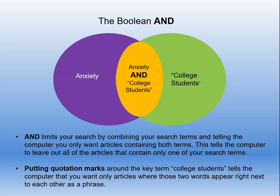AND is the Boolean operator most commonly used when searching. AND tells the computer you only want articles containing both keywords. Here's another database searching tip: if you want the database to find two words together as a phrase, put those two words in quotation marks. That tells the computer you only want articles where those words appear right next to each other. Do you think you'll get more or fewer results if you add yet another AND plus an additional keyword? Actually, you get fewer results because you've narrowed the computer's options when searching for you. Beware that it is possible to narrow your search too much and get absolutely no results.